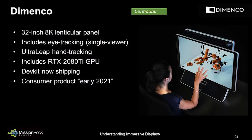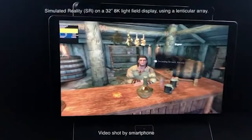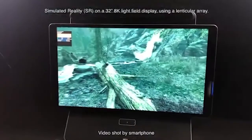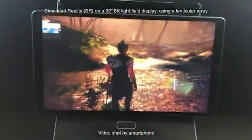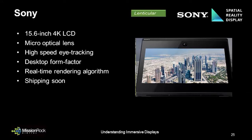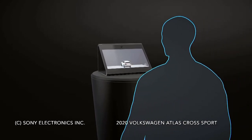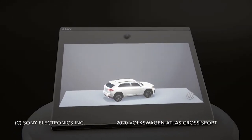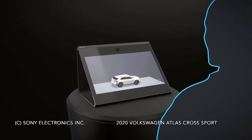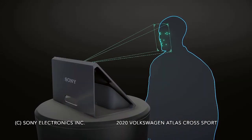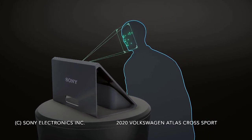Domenco is also developing a lenticular display, but this one is based on single-viewer eye tracking. It's always a challenge to show these displays in a video capture since they're designed specifically to take advantage of the human visual system, but the result is very effective. The recent big announcement in this area came from Sony, who announced the Spatial Reality Display. This is a tabletop display using a 15.6-inch LCD 4K panel fitted with a microlens array to project left and right eye images. A high-speed sensor tracks eye movement to precisely render each eye's image as your viewing position changes.